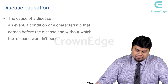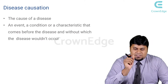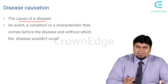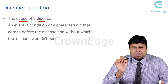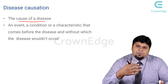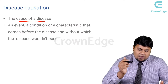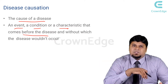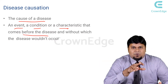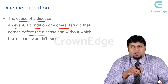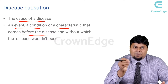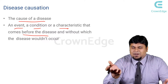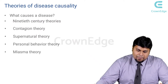Now let's understand communicable disease epidemiology. For communicable diseases, the identification of the cause is very well known — one particular agent, like Vibrio cholerae for cholera or Mycobacterium tuberculae for tuberculosis. Any event, condition, or characteristic that comes before the disease and without which the disease will not occur — for example, to see a case of tuberculosis, you must be able to collect a sample of that particular organism in that person. So communicable disease epidemiology is relatively simple to understand what causes disease.